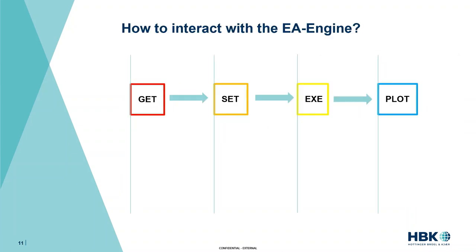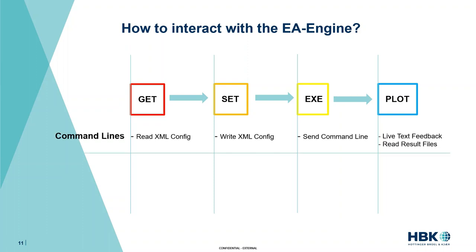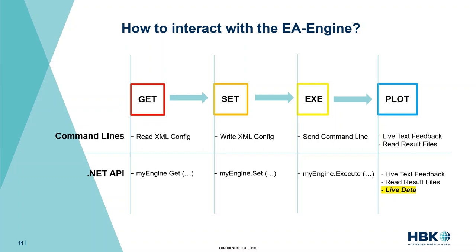How exactly do we interact with the EA Engine? We follow the scheme of get, set, execute, and plot. In the .NET API approach we have an EA Engine object — call it myengine. By calling myengine.get we return a settings object which we can modify. After adjusting test parameters we use myengine.set to update those settings, which updates the XML configuration file programmatically rather than manually. Then we call myengine.execute with whatever test we wish to run, and finally we have access to live data to plot and process however we'd like.